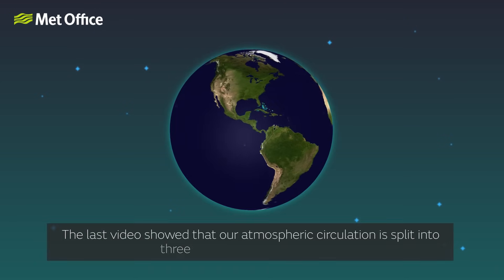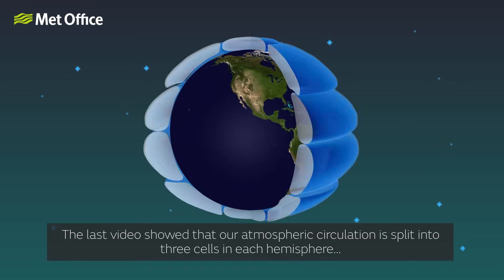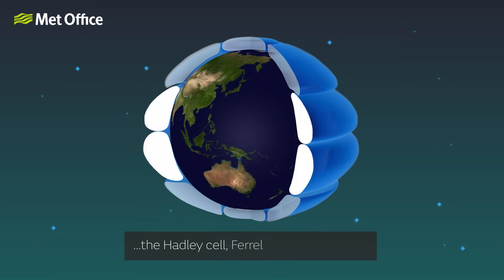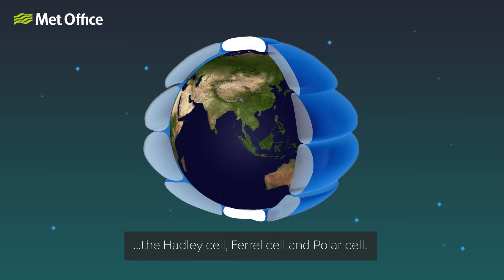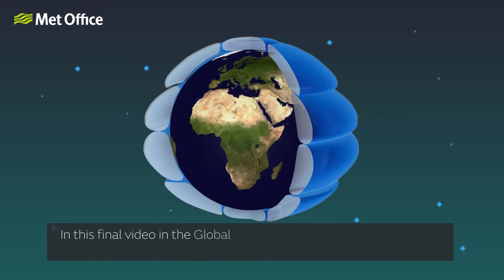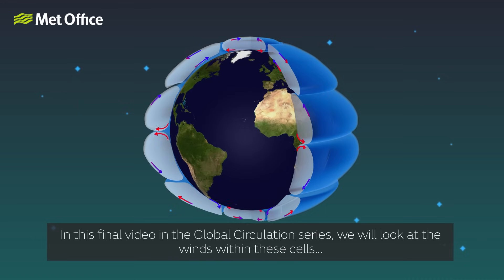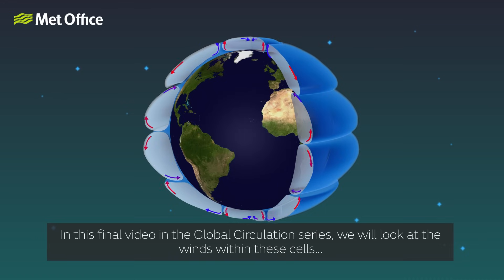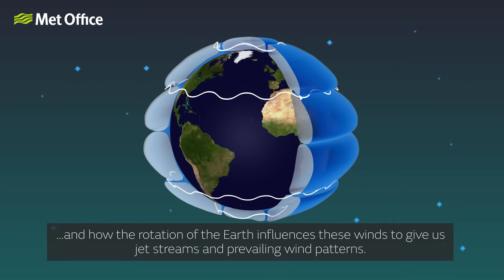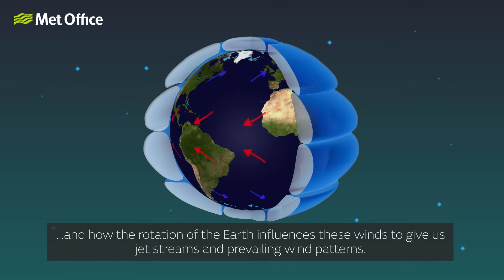The last video showed that our atmospheric circulation is split into three cells in each hemisphere: the Hadley cell, Ferrell cell, and polar cell. In this third video in the global circulation series, we will look at the winds within these cells and how the rotation of the Earth influences these winds to give us jet streams and prevailing wind patterns.